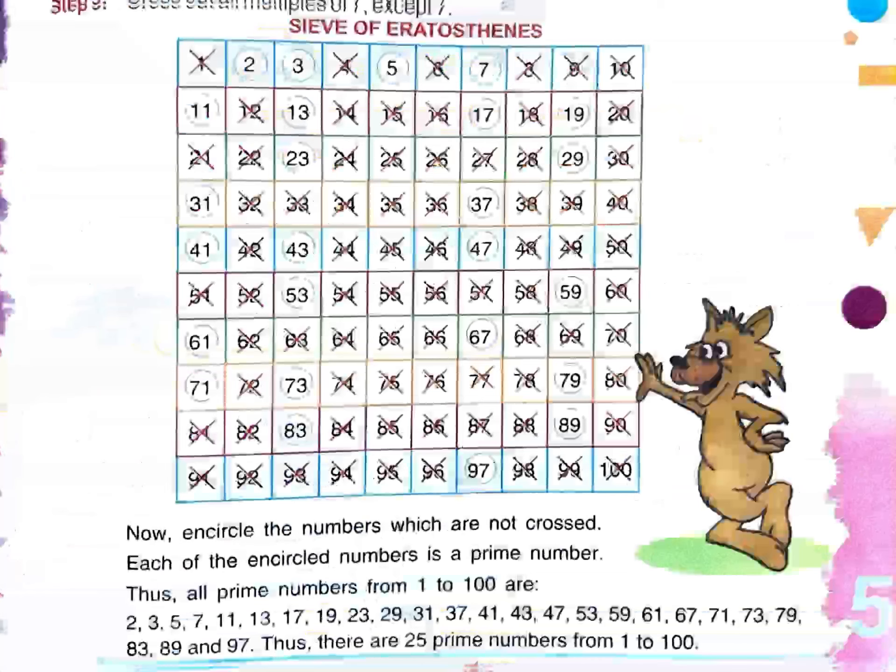All prime numbers from 1 to 100 are: 2, 3, 5, 7, 11, 13, 17, 19, 23, 29, 31, 37, 41, 43, 47, 53, 59, 61, 67, 71, 73, 79, 83, 89, and 97. The rest of the numbers are composite.